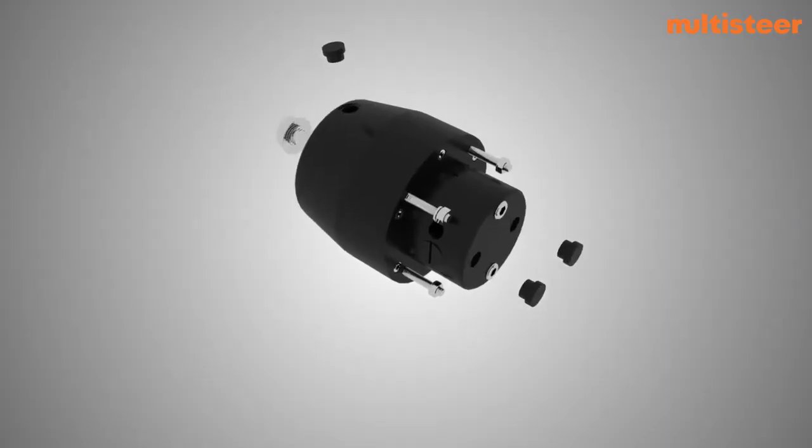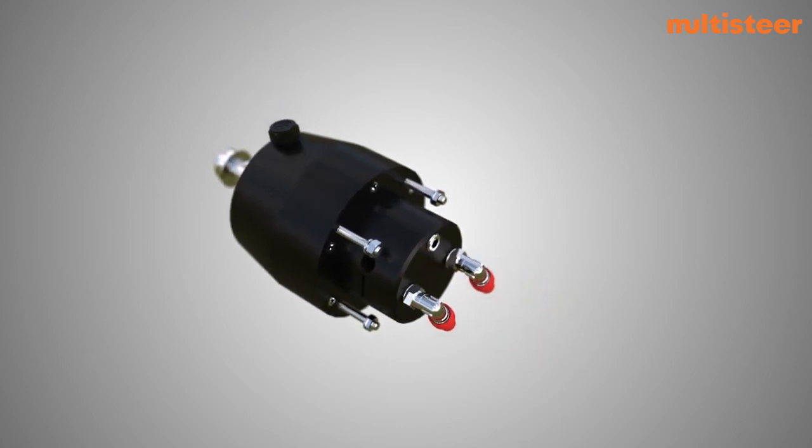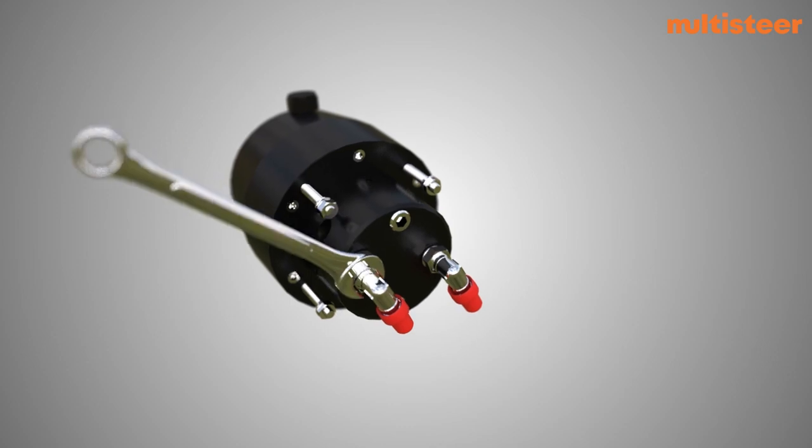Remove the protective plugs, nylock nuts and washer from the helm. Insert the vented plug into oil filling port and the elbow fittings into the elbow ports until they are fully seated with a wrench.